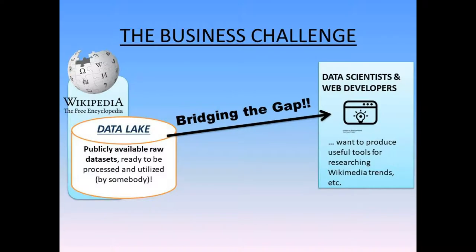The story of my project begins with a business challenge. On one side, we see the Wikimedia Foundation, better known as the Wikipedia people, and what they call their public data lake, where they make many, many terabytes of fairly raw data relating to their websites publicly available. On the other side are the data scientists and web developers who'd like to put this data to use for research or building websites, but they lack the data engineering skills and resources to aggregate, sort, and transform the raw data into a format they can use.